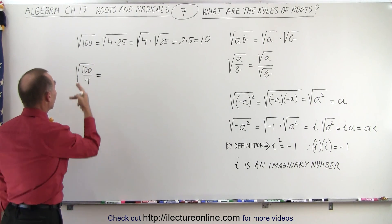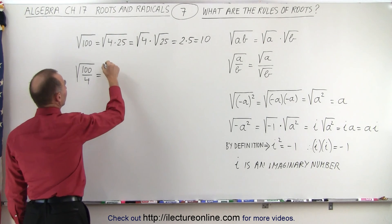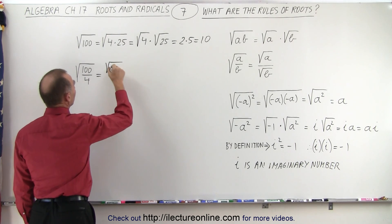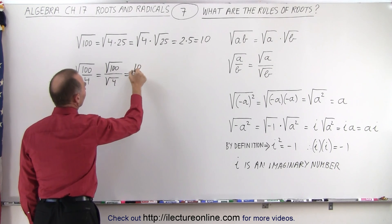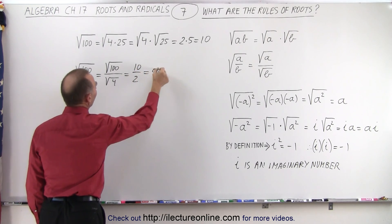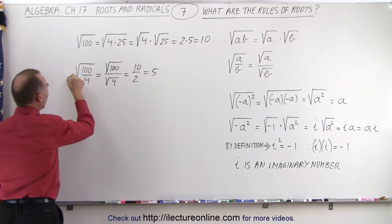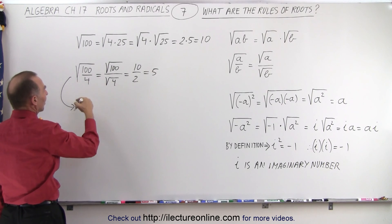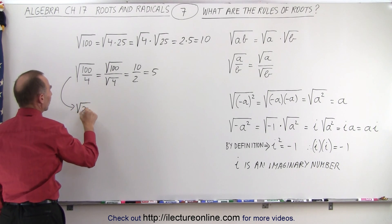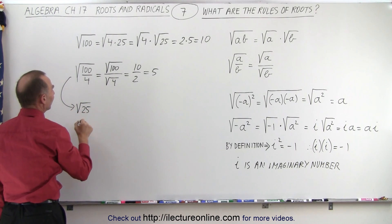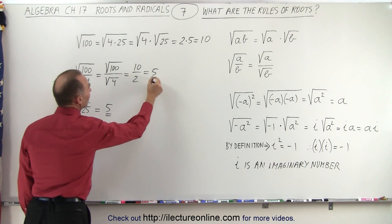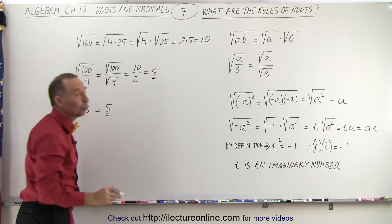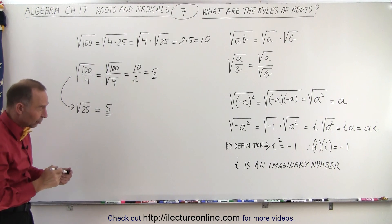How about the square root of 100 divided by 4? That can be written as the square root of 100 divided by the square root of 4, which is equal to 10 divided by 2, which is equal to 5. Or, we could have said 100 divided by 4 equals 25, and then taken the square root of 25, which is also equal to 5. Either way, you get the exact same answer.